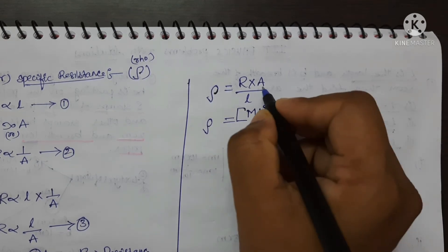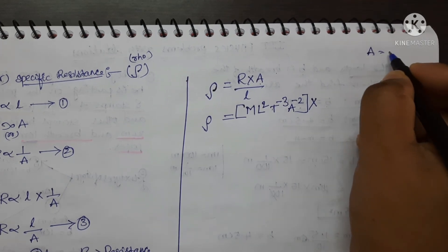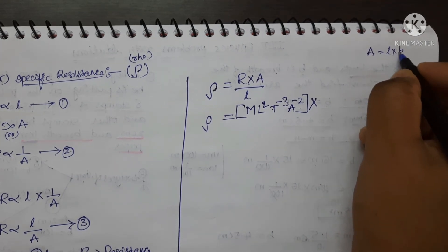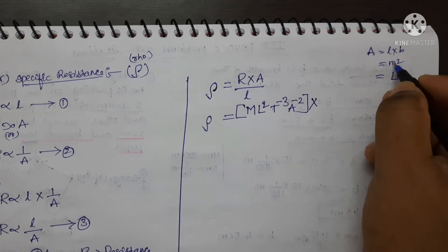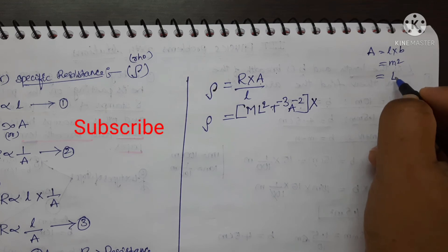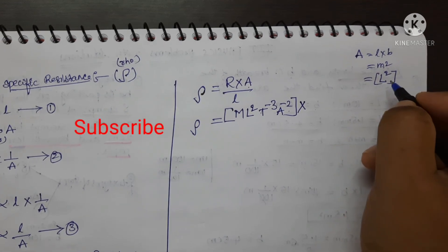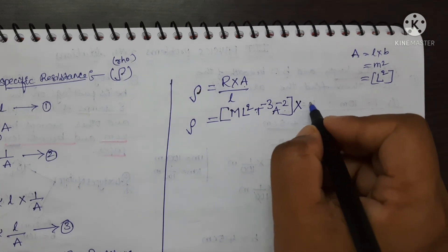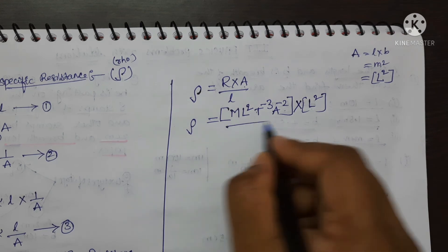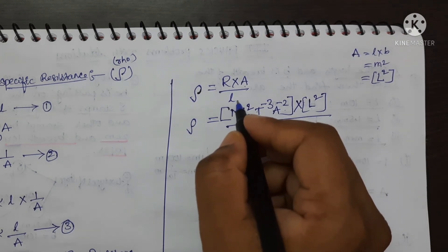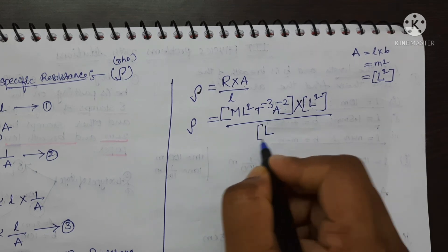A is the area of cross section. Area equals length into breadth, so its SI unit is meter squared, and its dimensional formula is L squared. And L is the length, whose SI unit is meter, which is expressed in terms of L. So I am writing L squared in the place of area of cross section and L in the place of length.